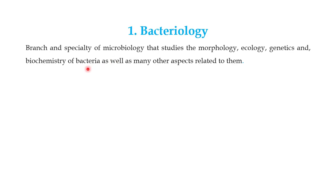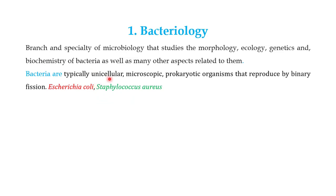The first important thing to understand is what bacteria are. Bacteria are usually unicellular organisms — they are made up of single cells. They are microscopic, so most of the time they are not visible to the naked eye and you have to use a microscope. They are prokaryotic organisms — I'll have a detailed video on prokaryotic and eukaryotic organisms — and bacteria usually reproduce by binary fission.